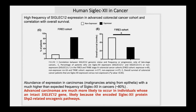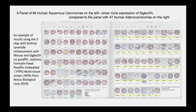We are still working on the mechanism. This panel shows multiple carcinomas examined in that study — squamous carcinomas and adenocarcinomas both showed high Siglec-12 expression, with squamous carcinomas showing higher expression than adenocarcinomas. Squamous carcinomas are those arising in the head and neck, tongue, oral cavity, esophagus, cervix, and so on.